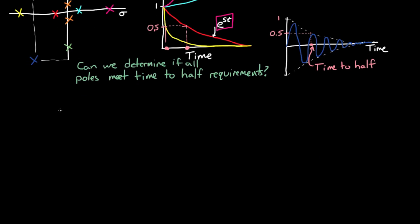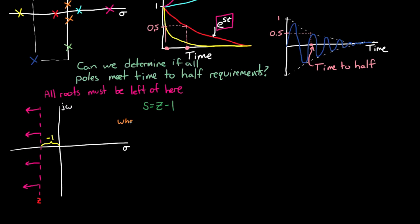So now the question becomes, is there a way to ensure our system meets our time to half requirement using the Routh array? And of course the answer is yes, otherwise I wouldn't have asked the question. So when you're given a time to half requirement, what you're really getting at is that all of the poles in the system must lie to the left of some non-zero line in the left half plane. For this example, we'll say that this line is at negative 1. And we'll call this line the z line. Now we can take a polynomial that's written in terms of s and write it in terms of z by saying that s equals z minus 1.